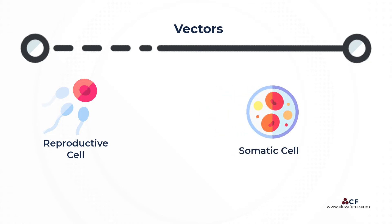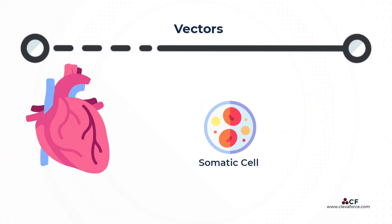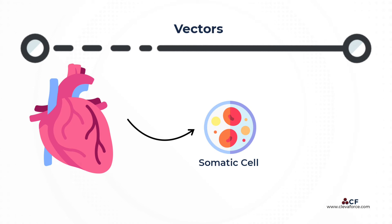But if the change were made to a somatic cell, changing all the other relevant somatic cells individually would be impractical due to the sheer number of such cells. A major organ's cells, such as the heart or liver, are too numerous to be changed one by one. Instead, a carrier or vector, which can be a molecule or an organism, is a common approach to reaching such somatic cells.